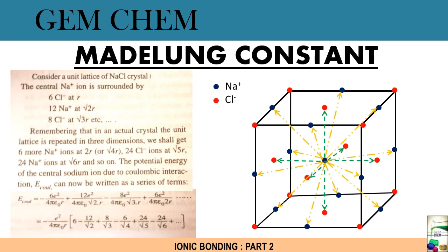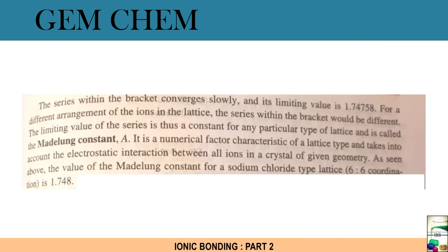The potential energy of the central sodium ion due to coulombic interaction can be written as same formula which we have seen for coulombic interaction, but only one thing appears is that distance changes and the value of N also changes. So we will just substitute the value. On substituting the value, we will get a series.